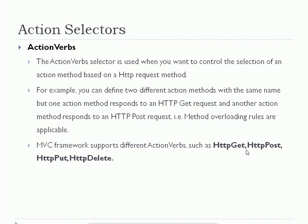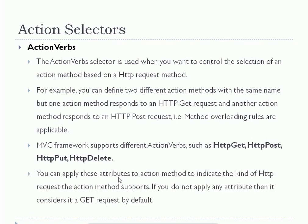MVC supports different kinds of action verbs: HttpGet, HttpPost, HttpPut, and HttpDelete. There are more HTTP verbs you can browse for, but basically in MVC we focus on GET and POST. PUT is generally used in APIs to change a resource, and HttpDelete is used to delete a resource.